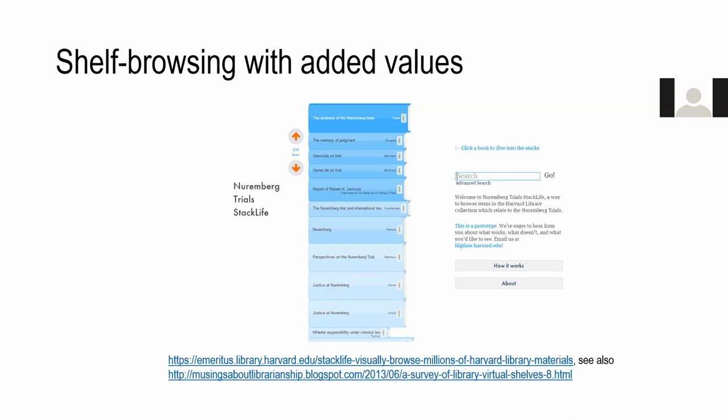Stack Life is a virtual shelf browser with added functionality. If you searched for a keyword, you'd get a list of titles, and the blueness of the titles indicated their usage within the Harvard community — the bluest title being the most often checked out. The thickness of each book indicated its actual physical thickness. There were several more very interesting functionalities in this solution that don't deserve to be buried — it's a very interesting approach you can read about via the links on the slides.